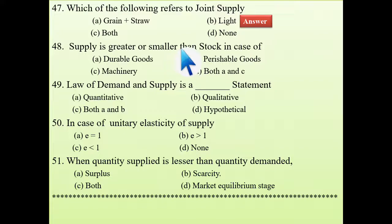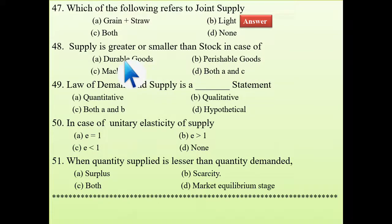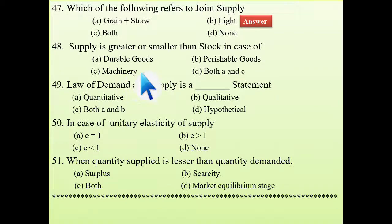Next: supply is greater than or smaller than stock in which case? Supply is not equal to stock in the case of durable goods. In the answer options, machinery is also listed but machinery is a durable good, so the answer is both durable goods and machinery.